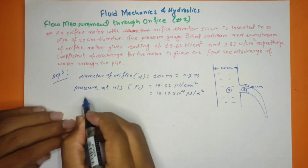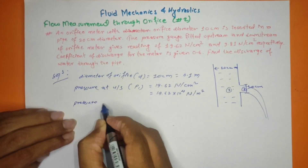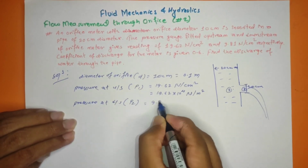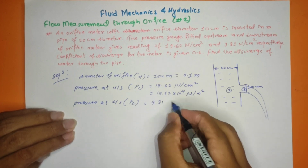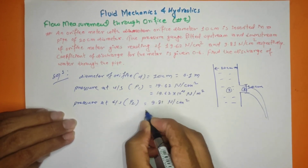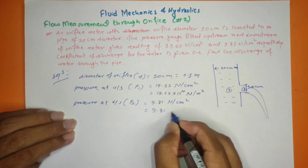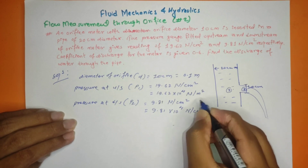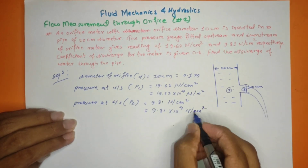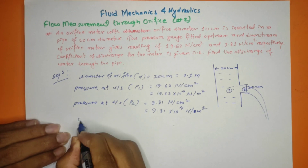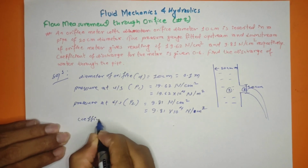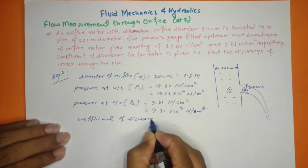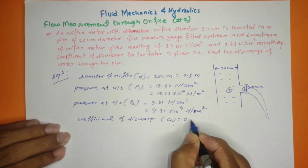Downstream pressure P2 = 9.81 N/cm², which equals 9.81 × 10⁴ N/m². The coefficient of discharge Cd = 0.6.